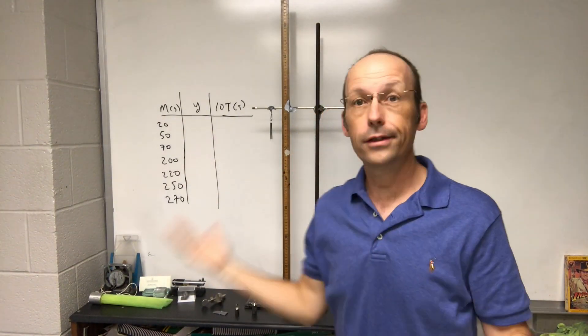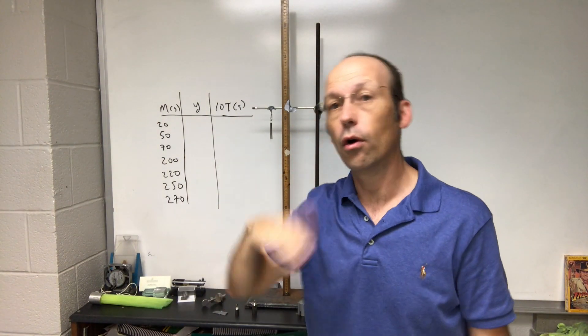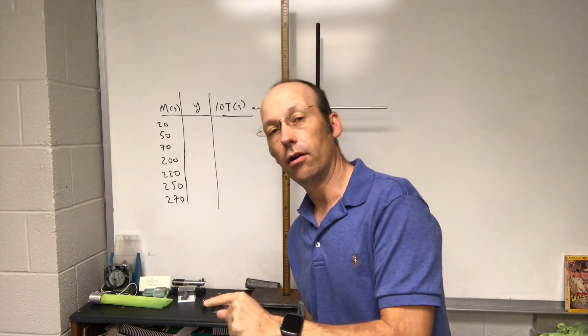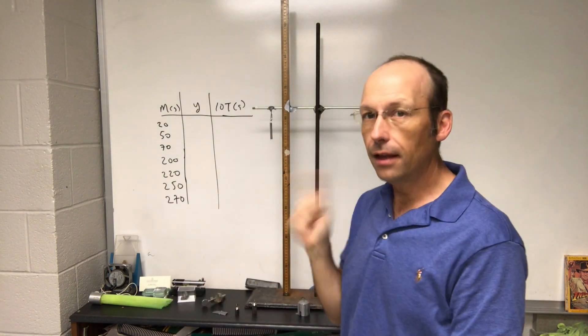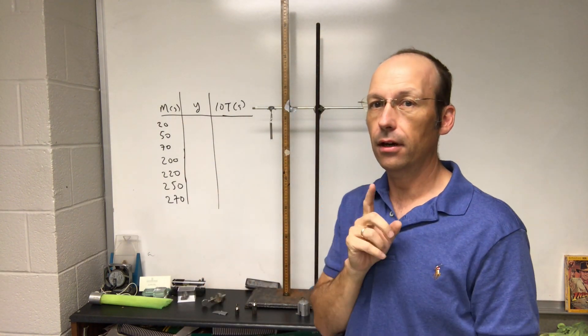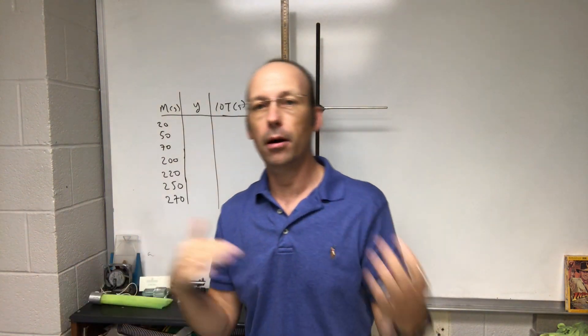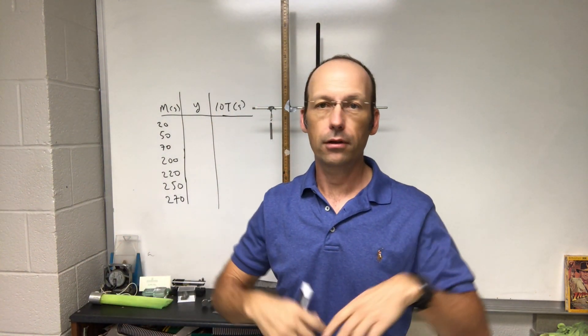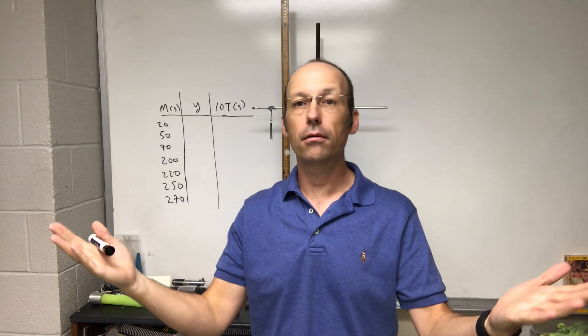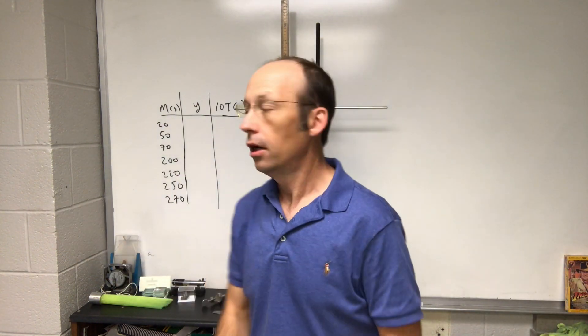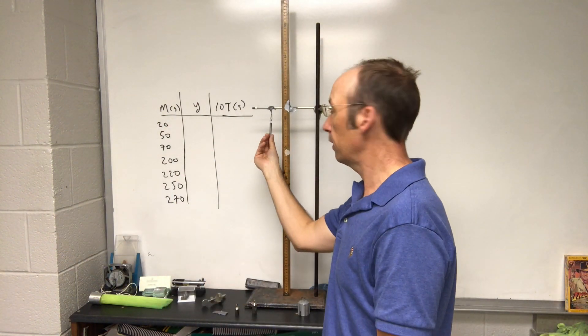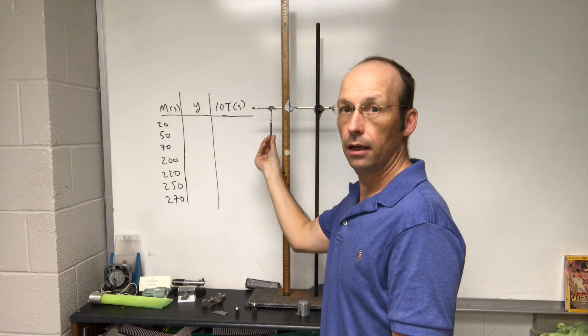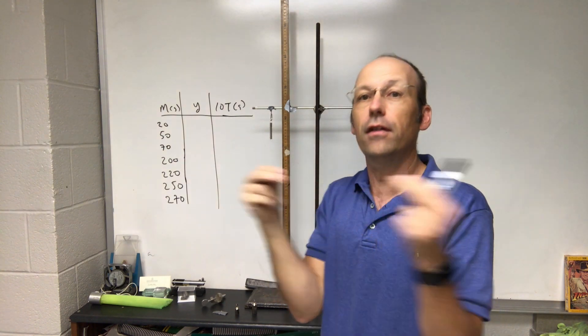We're going to do a physics lab right here, right now. Students have a lot of problems with this, so I'm going to show you how to do it. The video will be available so you can go back and rewatch. Here I have a spring and I want to find the stiffness of the spring two ways, and in both cases I'm going to make a graph.